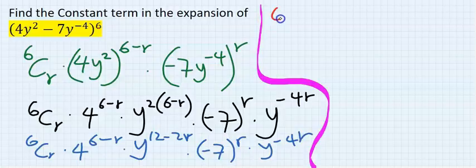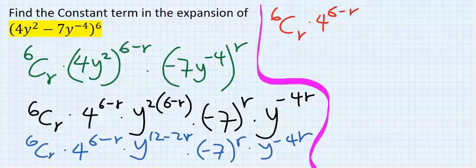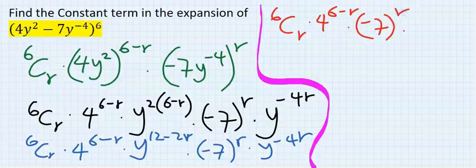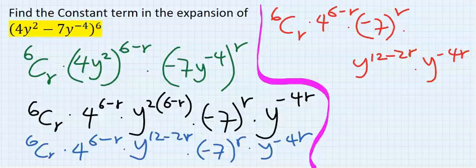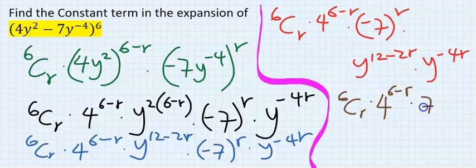Next, put the numbers together. Four to the power of (six minus r) stays, six-combination-r gives you a number, and (minus seven) to the power of r. Then put the y's together: y to the power of (12 minus 2r) and y to the power of (minus 4r). This gives us: six-combination-r times four to the power of (six minus r) times (minus seven) to the power of r, then y to the power of (12 minus 2r minus 4r).